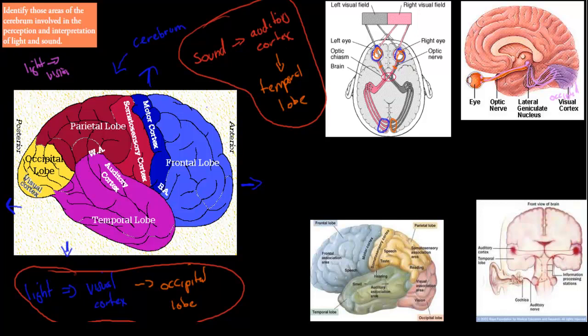For hearing, the auditory cortex is part of the temporal lobe, found on the side of the brain. The left ear is connected to the right side of the brain, and the right ear is connected to the left side. In many cases, the left side of the body is controlled by the right side of the brain and vice versa. However, recent studies have shown it's not a complete split — there is some crossing over, with some overlap in how each side of the brain assists both sides of the body.